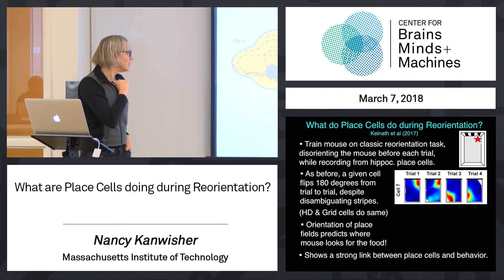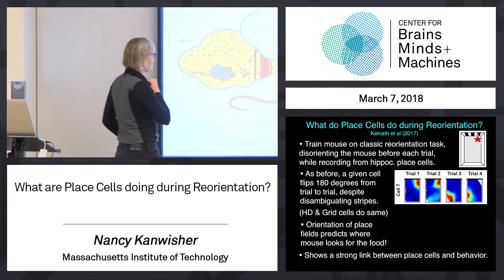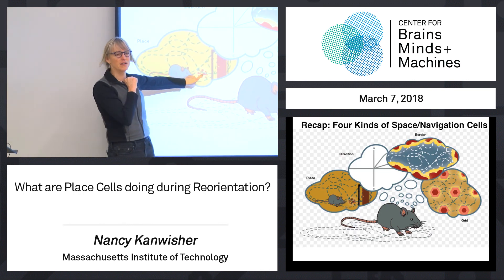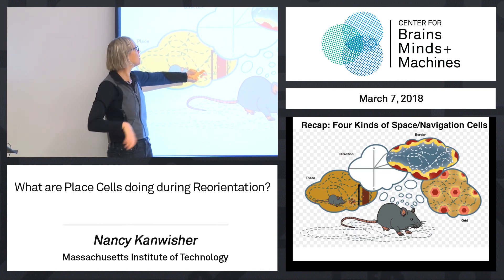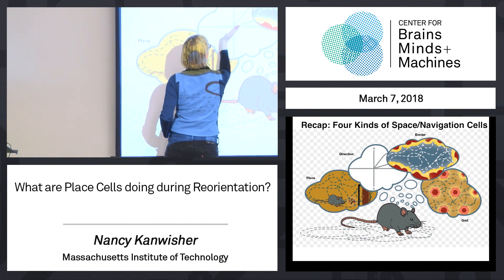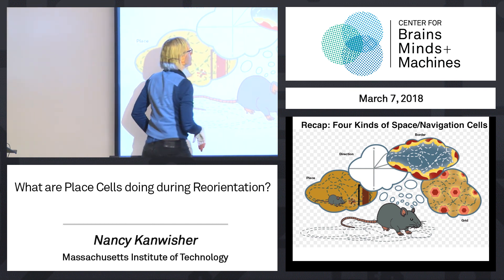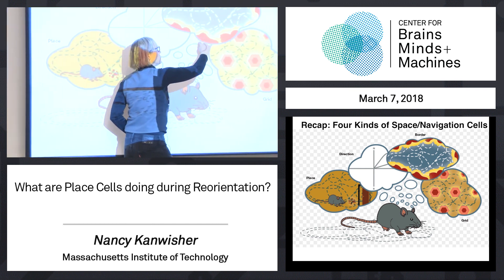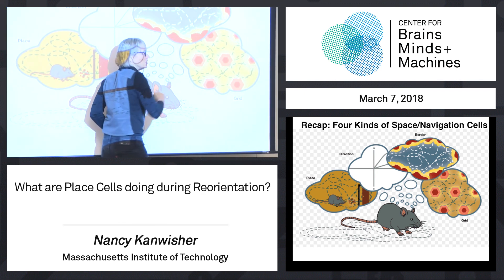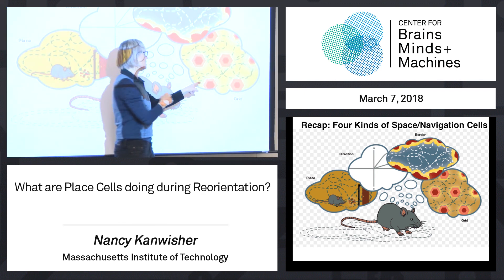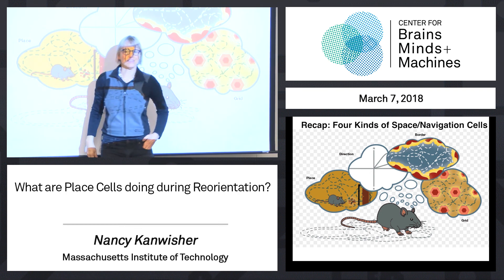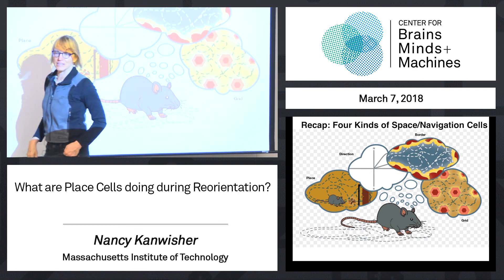So, just a summary of the four kinds of cells: place cells that fire at a given location in the environment; direction cells that fire when the animal is oriented in a given way; border cells that fire when the animal is near a navigational boundary; and grid cells that fire in a hexagonal grid-like pattern as the animal moves around in the environment.